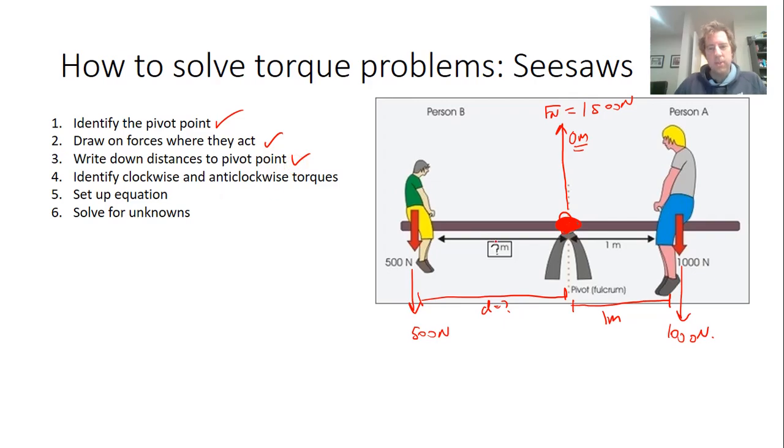Identify the clockwise and anti-clockwise torques. You have to imagine if I redraw my guy. What's causing it to rotate anti-clockwise? Anti-clockwise is this way. So what's trying to cause it to do this? It's trying to cause it to go down like that. Well, the thing that's pulling it down that way is person B. So person B is an anti-clockwise torque.